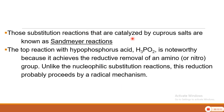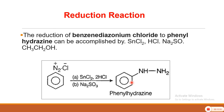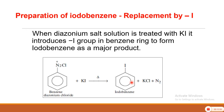The reaction with hypophosphorous acid is noteworthy because it achieves the reductive removal of an amine group. Unlike nucleophilic substitution reactions, this reduction probably proceeds by a radical mechanism. A summary slide shows all these possible reactions — consider only those reactions mentioned in the detailed slides as per the syllabus, as the rest are not expected. This slide serves as a revision of all these reactions.